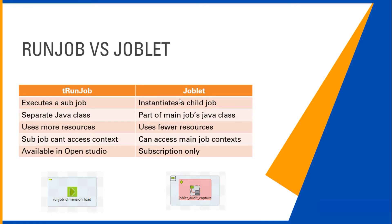Here are some of the differences between tRun Job and Joblet. As you know, tRun Job and Joblet are reusability features in Talend, used for reusing existing code, which saves time and is a best practice. tRun Job executes a sub job, whereas Joblet instantiates a child job — this child job is treated as a part of the main job only, which is why Joblet is used.